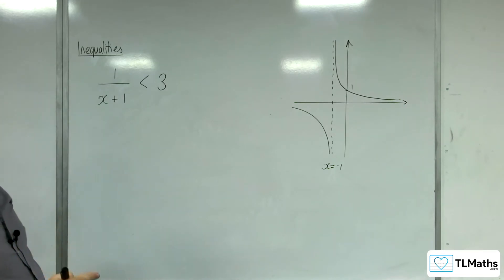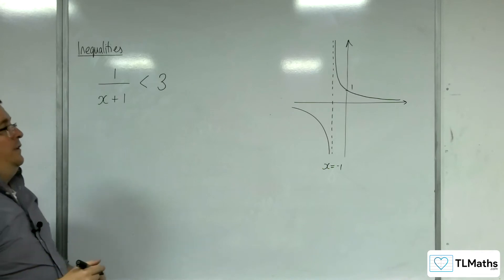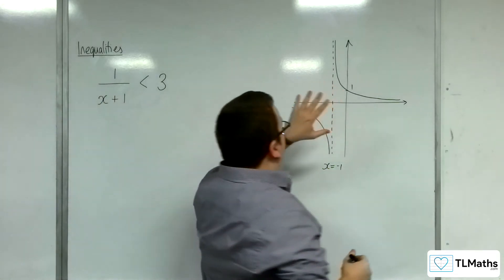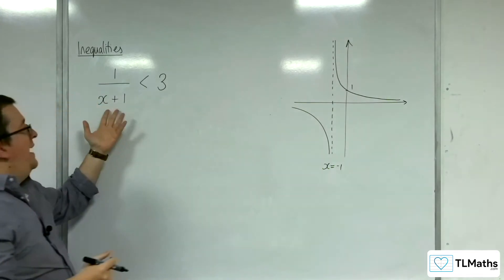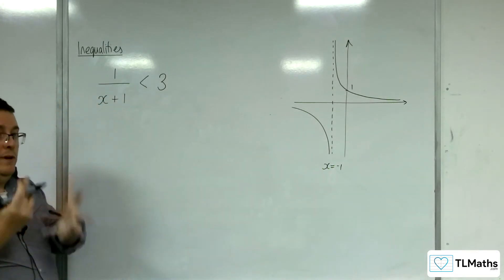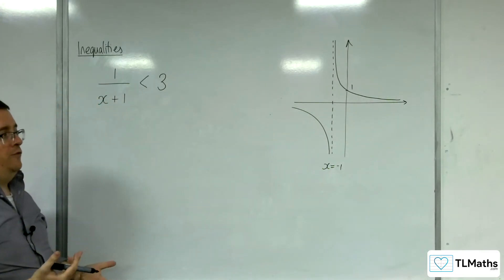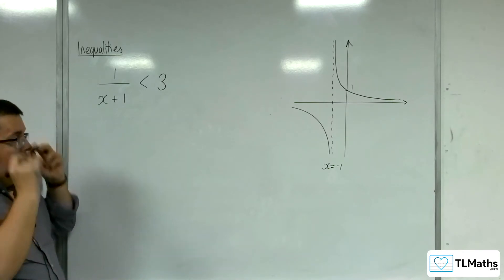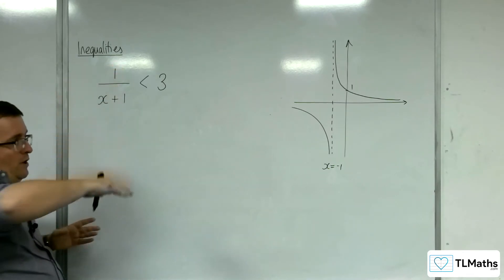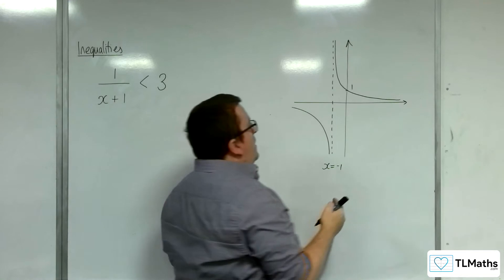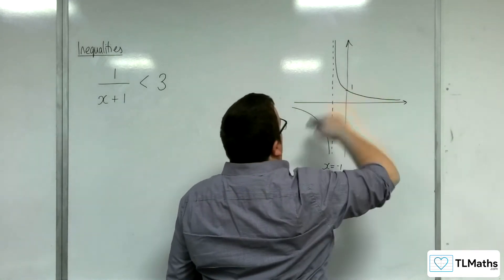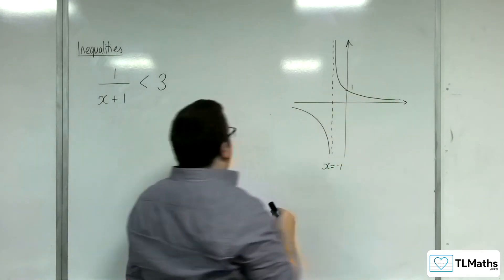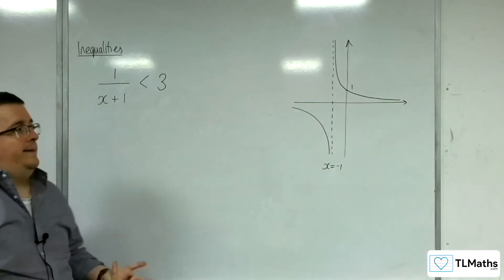I know it looks like that because 1 over x is similar to this graph, but this has been translated one step to the left because the x was replaced with x plus 1. If you're unsure about which direction it's coming down, you could always try a value and see if it's above or below the x-axis.